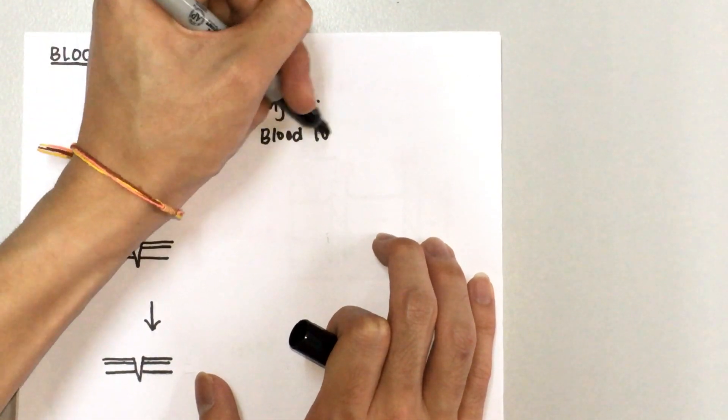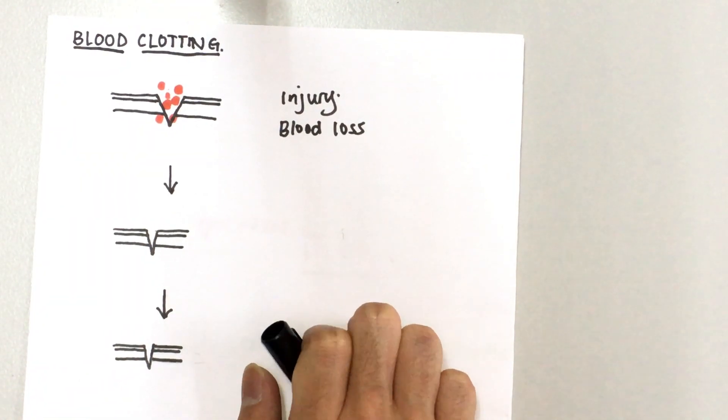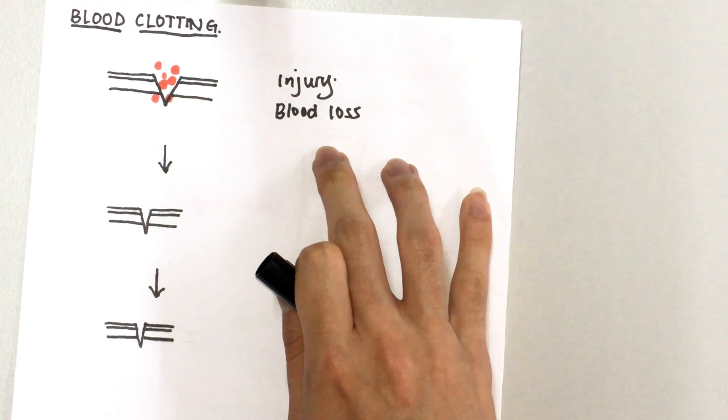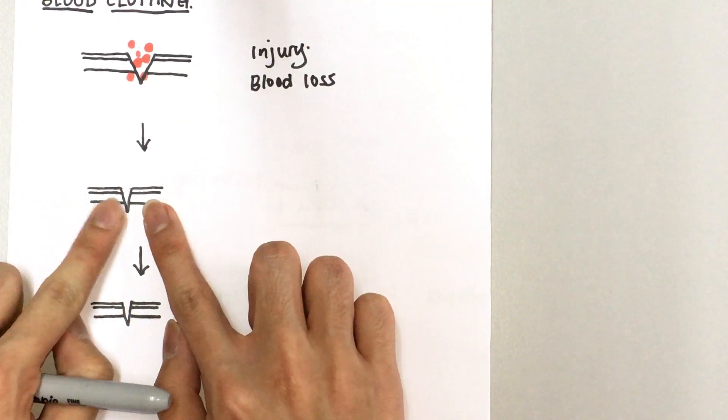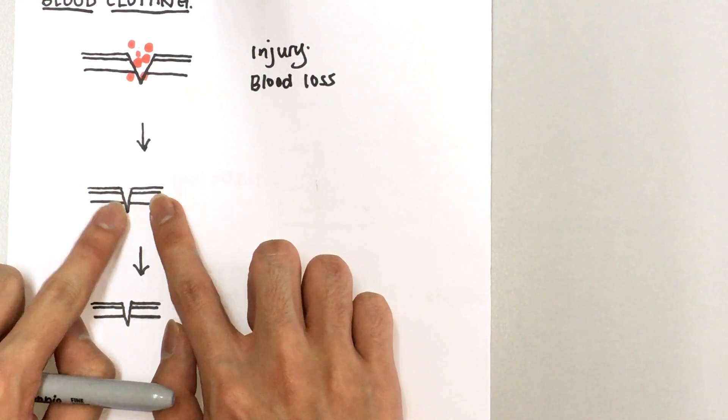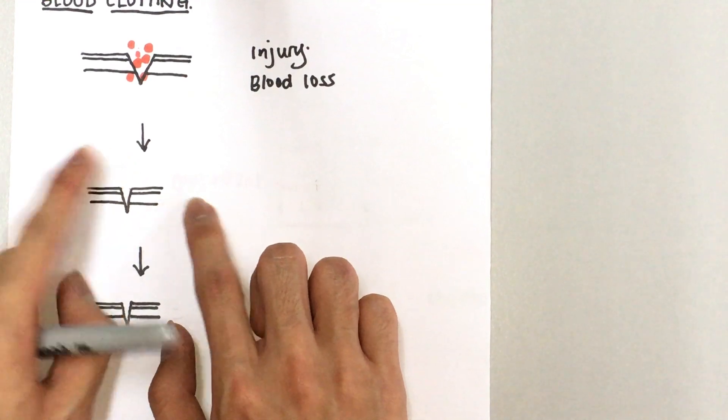So obviously the process of blood clotting is to prevent further blood loss. So what happens to prevent that blood loss? Your vessel will constrict to narrow the blood flow, alright, so less blood can flow out. And...